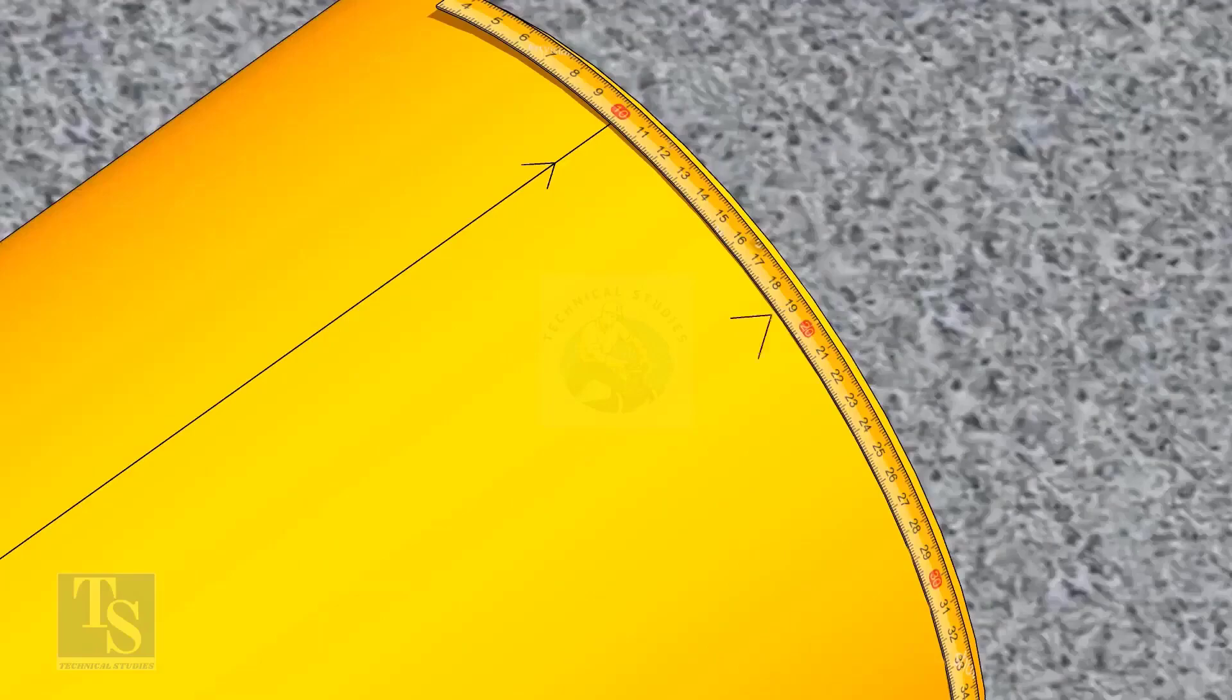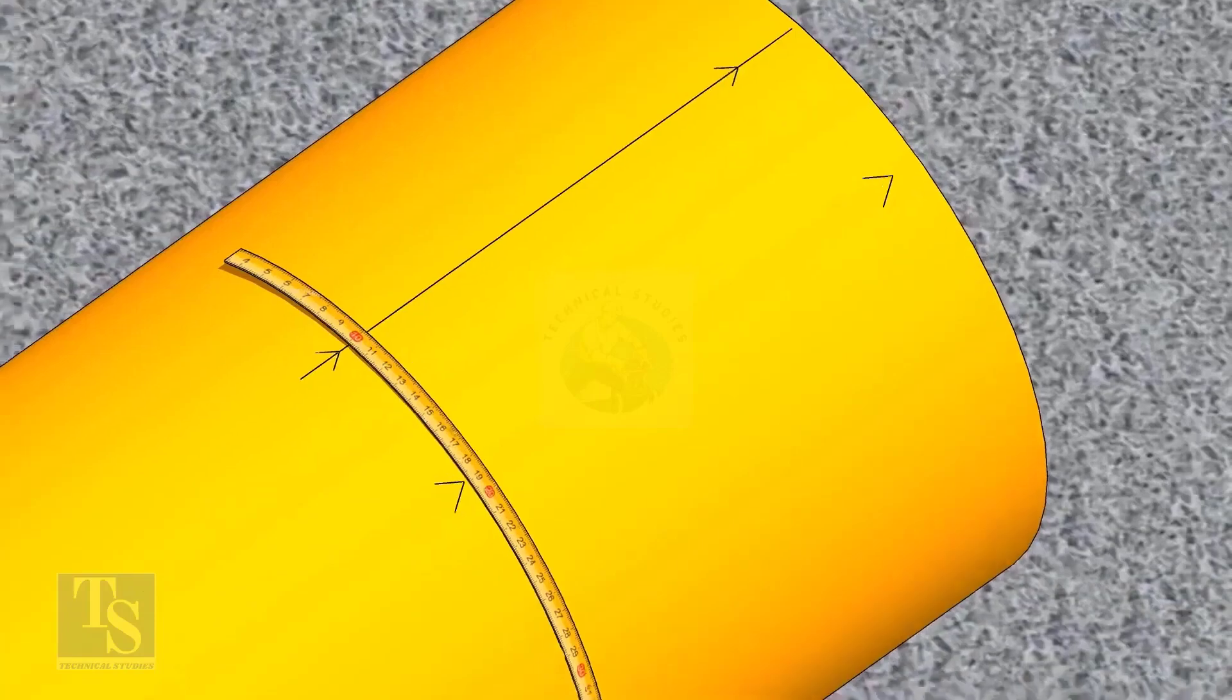Since we are rotating the flange 25 degrees anticlockwise, mark 88.5mm anticlockwise on the pipe, as shown.